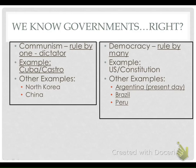Next, we have a democracy — this is rule by many. An example is the United States. The Constitution makes us a democracy, also makes us a limited government, while communism is an unlimited government. Other examples that exist today inside of South America are Argentina, Brazil, and Peru. Argentina wasn't always like that — remember yesterday we talked about the Dirty War. They were under a military group called the Junta, and now they have transitioned into modern-day democracies.